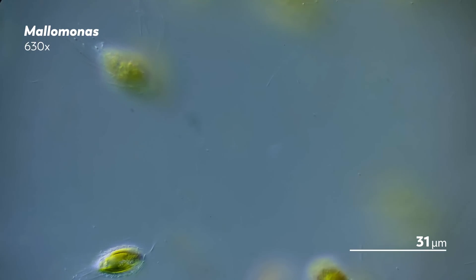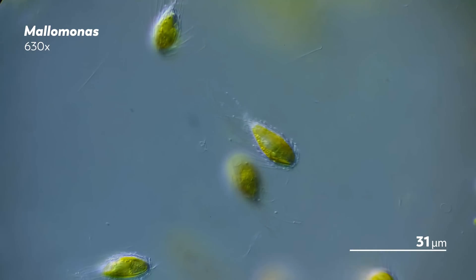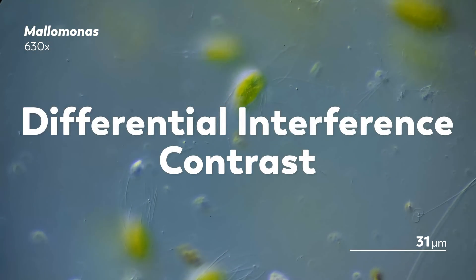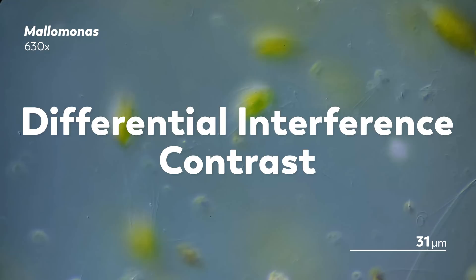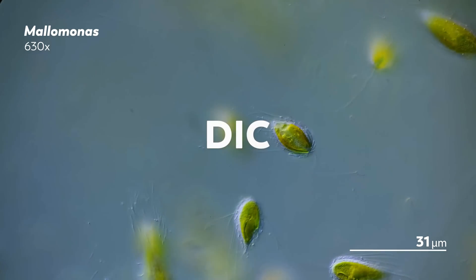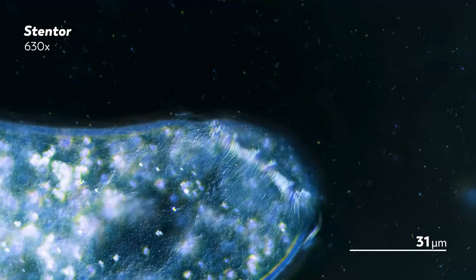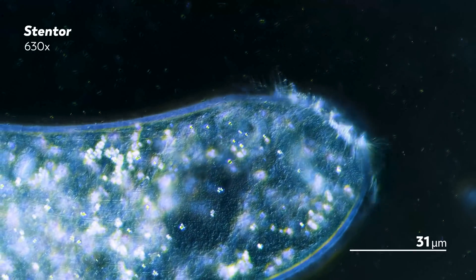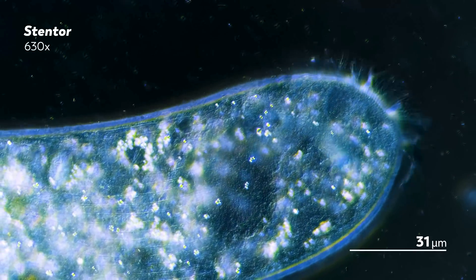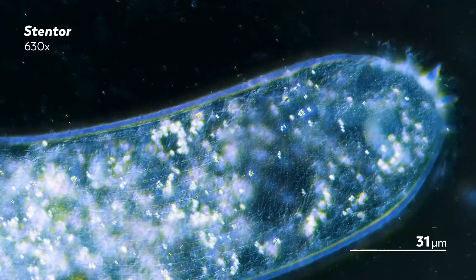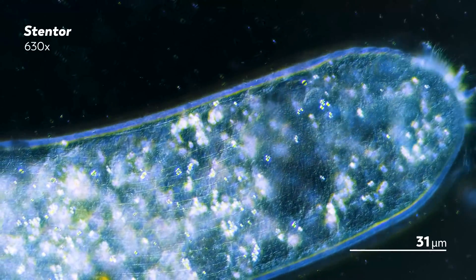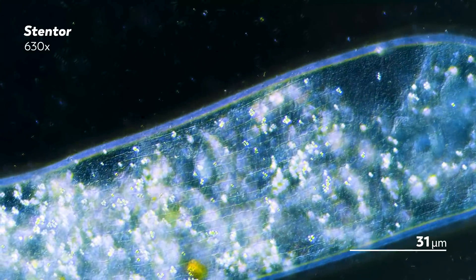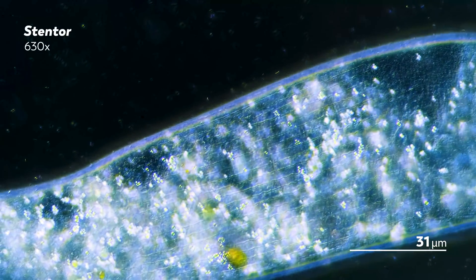Those differences in how the Malamuna look are due to a type of microscopy called Differential Interference Contrast, or DIC. Earlier this year, James started a crowdfunding campaign to purchase a new microscope, one that would allow him to use Differential Interference Contrast to produce these images you are seeing now.